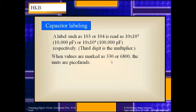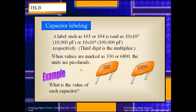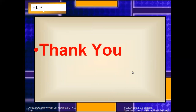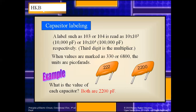Values may also be stamped directly as C30 or 6800, with the unit always considered as picofarad. For example, 222 stamped on a capacitor means 222 picofarad, and 2200 means 2200 picofarad. This covers all about the labeling and types of capacitors.